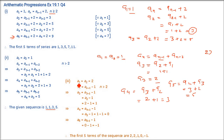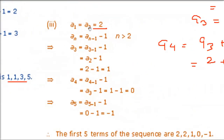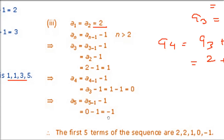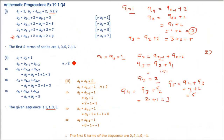Third part: a₁ = 2, a₂ = 2 (both given). The relation is aₙ = aₙ₋₁ - 1. So a₃ = a₂ - 1 = 2 - 1 = 1. a₄ = a₃ - 1 = 1 - 1 = 0. a₅ = a₄ - 1 = 0 - 1 = -1. The 5 terms are 2, 2, 1, 0, -1.